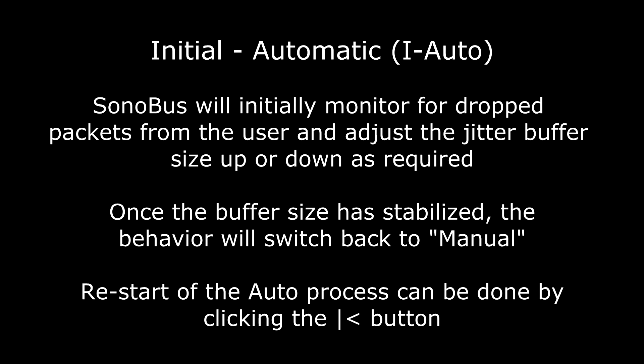The third mode is called initial automatic. In this mode, Sonobus will initially behave like the automatic mode and come up with a buffer size that eliminates any dropouts from a player in the session. But once the buffer size has stabilized, it will revert to the manual mode and no longer make any changes to the buffer size. If you notice that the dropout conditions for a player have improved, you can click the button to the right of the jitter buffer display area to restart the initial automatic process. I use this as my primary jitter buffer mode when using Sonobus. It provides a nice balance between the automatic and manual modes.